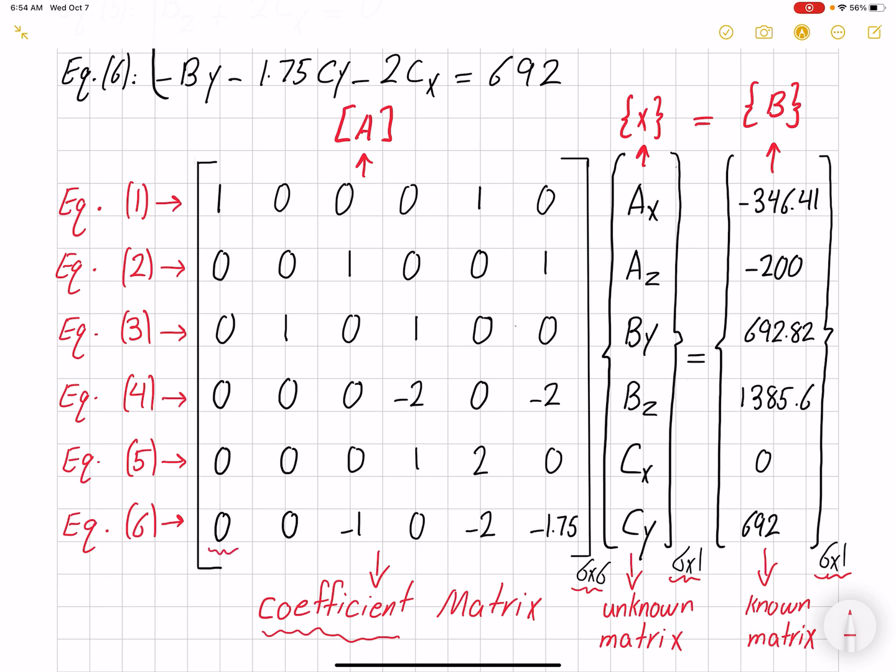By: the equation has a By and the coefficient is negative one here, so I have negative one. Then I will go to Bz: there is no Bz so the coefficient is zero.